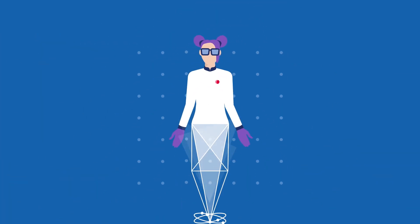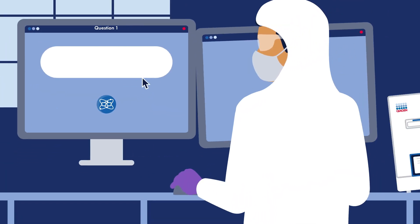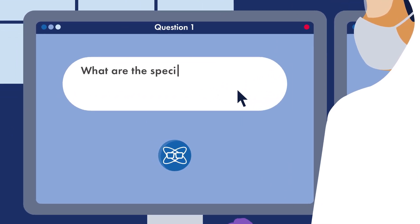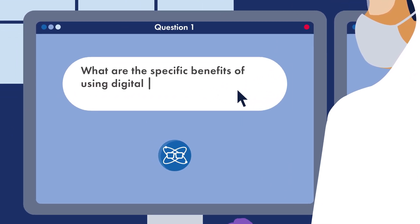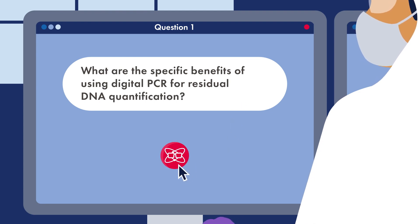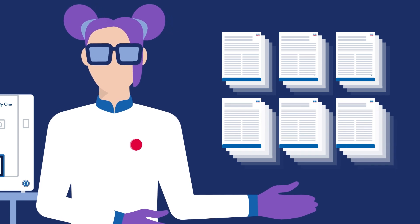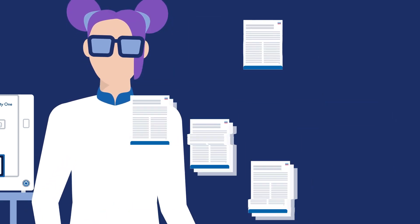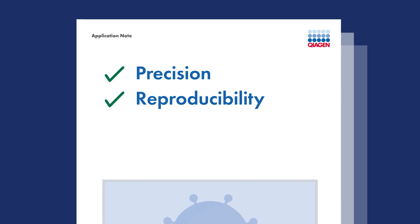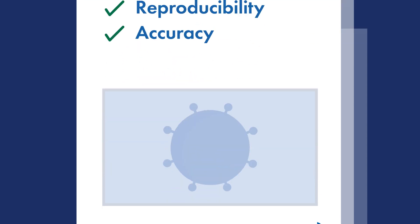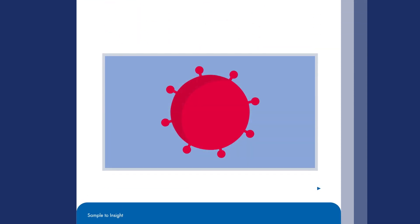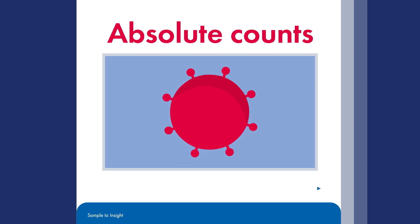Let's have a look at the first question. Question 1: What are the specific benefits of using digital PCR for residual DNA quantification? Digital PCR has been shown in many biomanufacturing applications and publications to have high precision, reproducibility and accuracy compared to real-time PCR when looking for a low abundant target in complex bioprocess intermediates. And don't forget you get absolute counts.